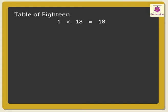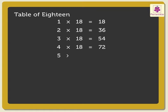2 × 18 are 36, 3 × 18 are 54, 4 × 18 are 72, 5 × 18 are 90.